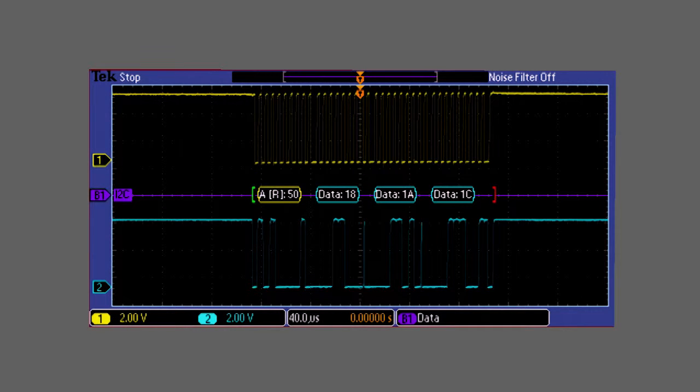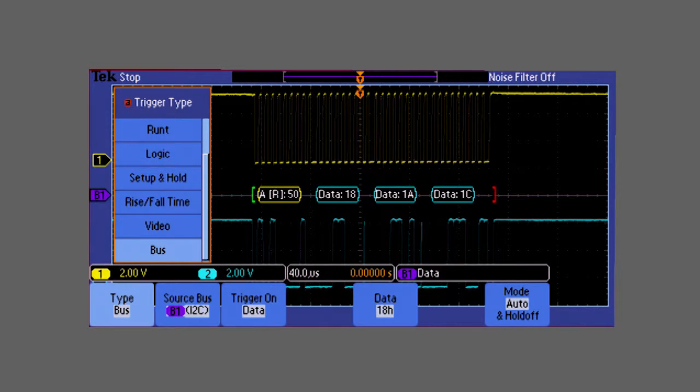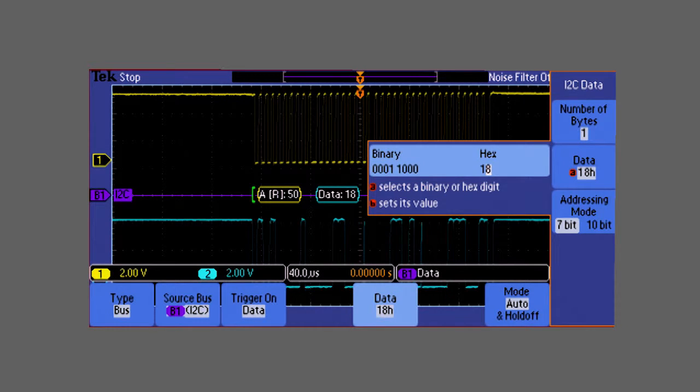Built-in analysis tools for serial buses and parallel buses allow you to easily trigger on a specific data packet, decode your entire bus communication, and search for every occurrence of a bus event.